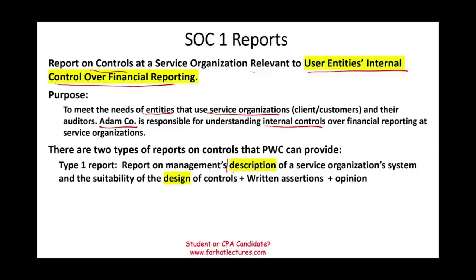Type 1 is a report on management's description of a service organization's system and the suitability of the design of the controls. Simply put, they give you a report explaining and narrating the internal control — a description and the design. They also provide written assertions about the controls and give you an opinion. This is type 1: this is how the control works. They may give you flowcharts and show you the design, but that's about it.